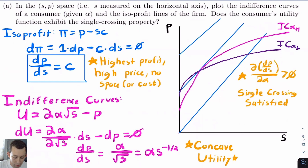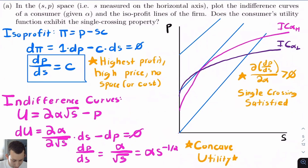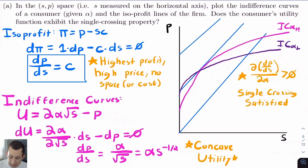The first part of this problem asks us to plot the indifference curves of the consumer and the iso-profits, and it asks about the single crossing property. For the iso-profit, profit is P − Sc, so taking the total derivative gives dP/dS = c, meaning iso-profits are just straight lines. For the indifference curve, taking the total derivative gives dP/dS = α/√S, which is concave. If alpha is high, the slope is greater, so the two indifference curves satisfy the single crossing property.